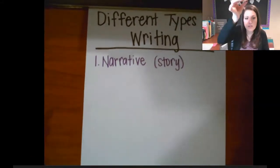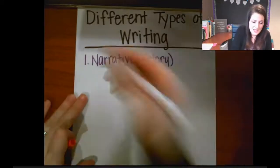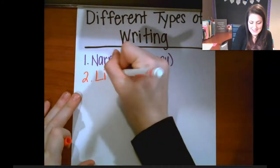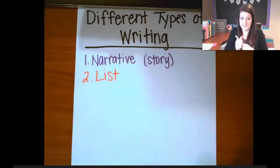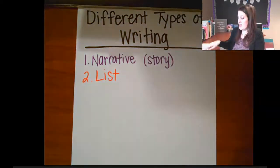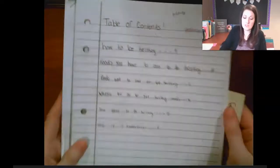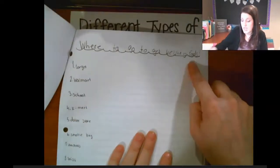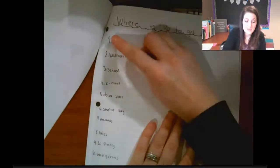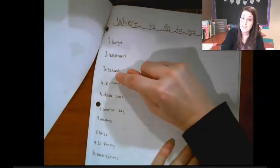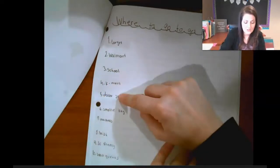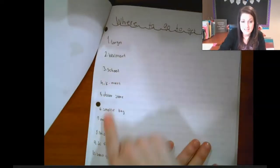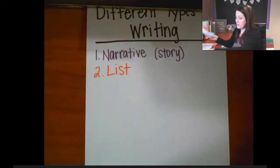The next type of writing you might choose to include would be a list — a bulleted list with bullet points. Here's an example from a student writing about healthy eating. They made a list of where to go to get healthy foods, numbered one through five: Target, Walmart, school, Kmart, and the dollar store. You don't have to number it — you could use bullet points instead.